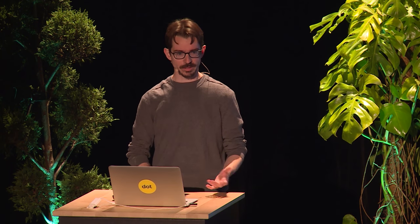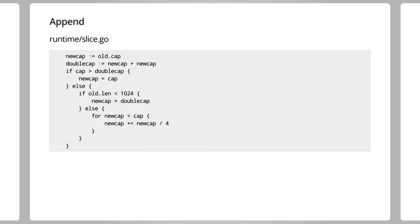Of course, if you know how big your slice is going to be, just allocate the entire thing up front. You can still use append, but it will save the extra copying and the GC pressure from having to throw away the old slices that are now too small.